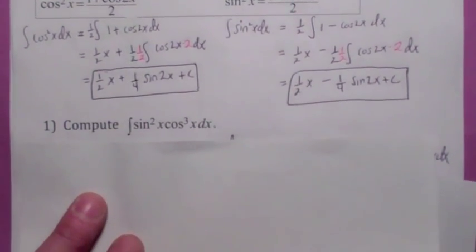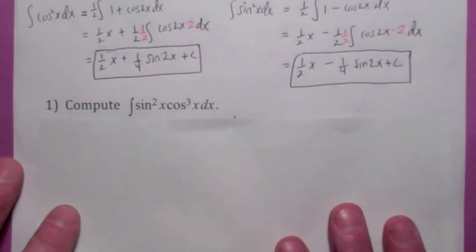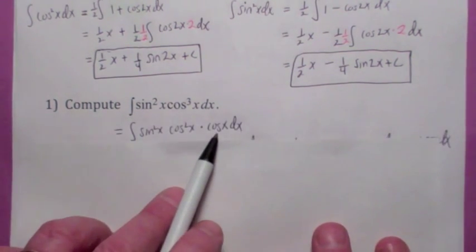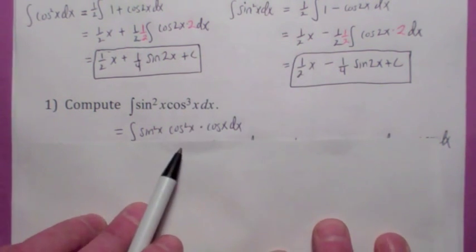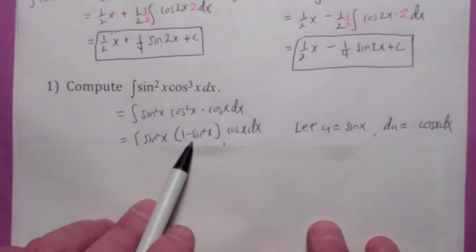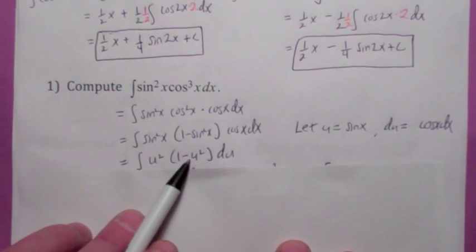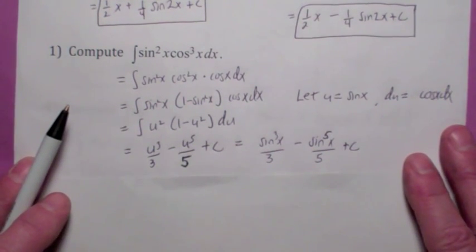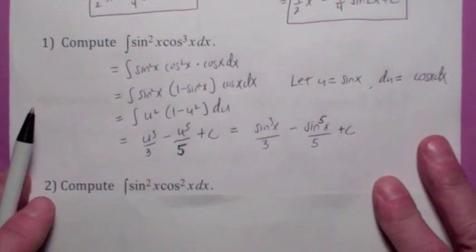Let's talk about how to integrate when you have powers of sine and cosine. If one of the powers is odd, you break off that one power and that becomes your du. Since du is cosine x, u has to be sine x, so you write everything else in terms of sine x. Cosine squared can be written as 1 minus sine squared x. So this becomes essentially u squared times 1 minus u squared du. When you integrate, you get u cubed over 3 minus u to the fifth over 5 plus c. Make sure you write it back in terms of x.